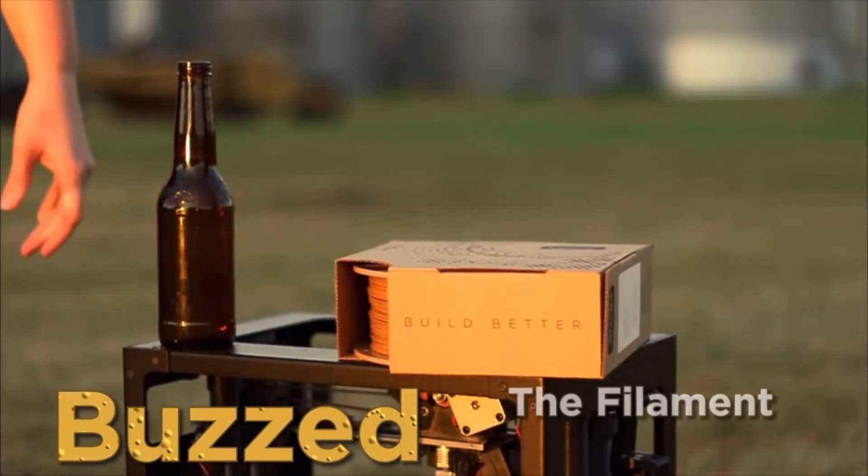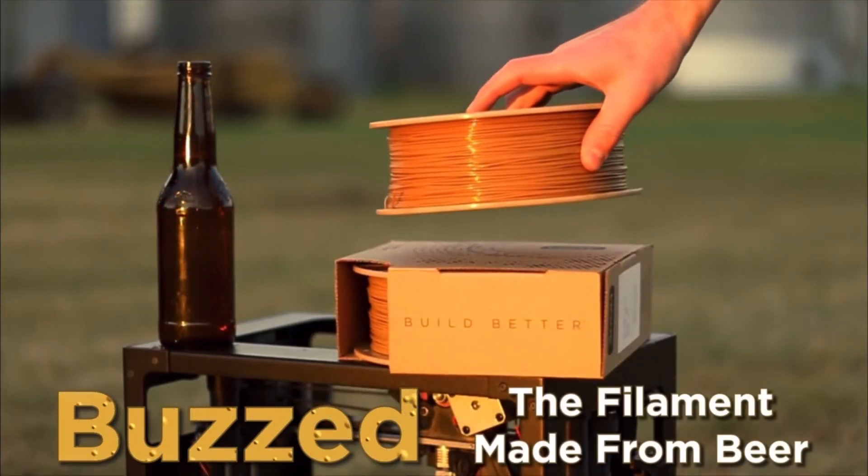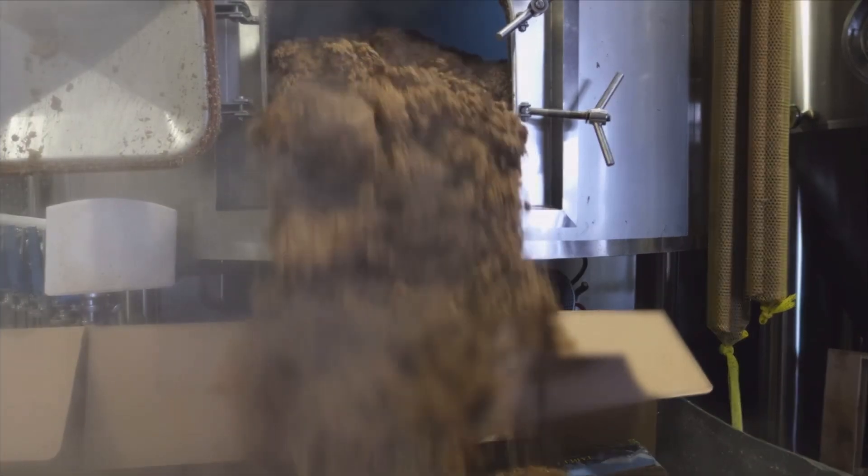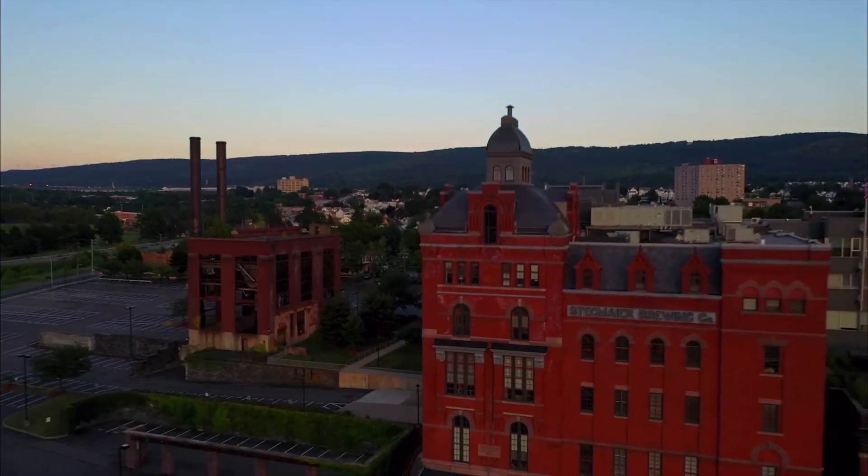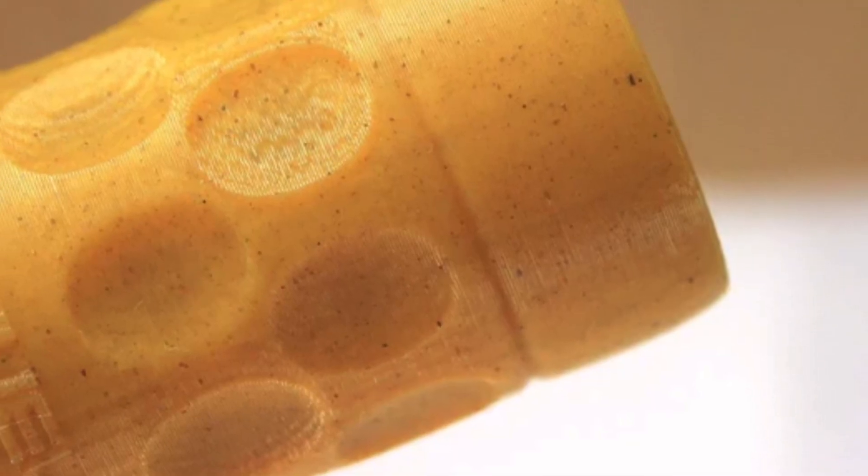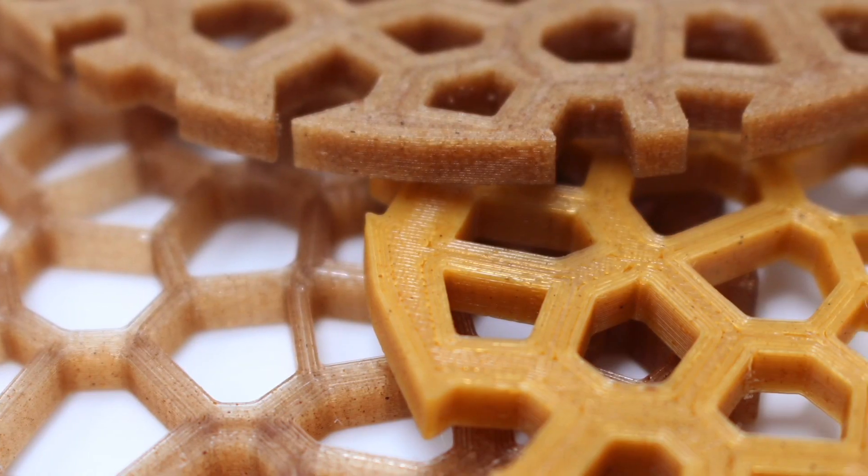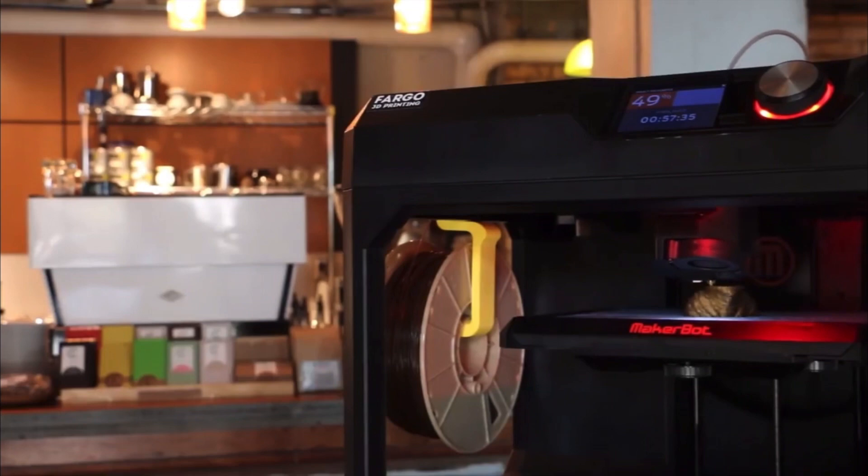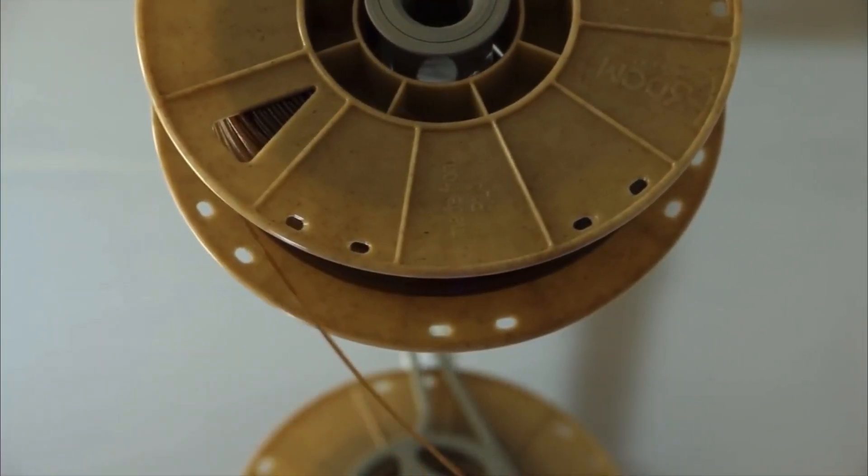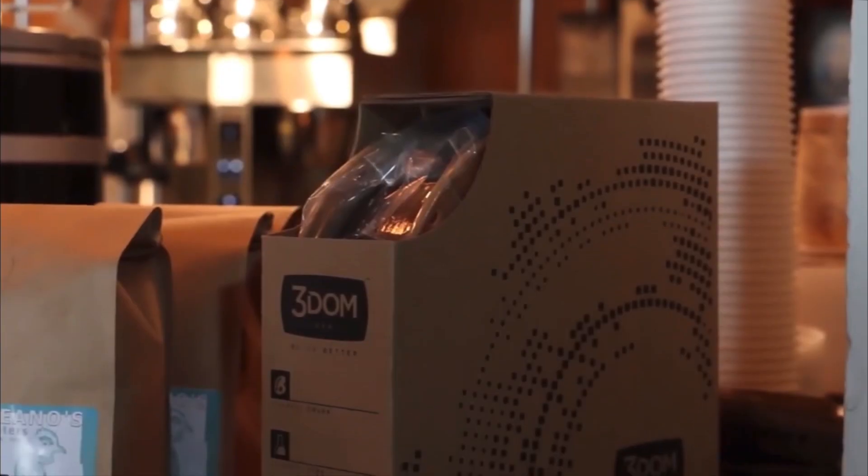Buzzed is their beer-based filament and is made by using waste products produced during the beer-making process, which is sourced from a local brewing plant. The filament produces objects with a rich golden color and noticeable natural grain. Buzzed and wound-up filaments can be printed on any machine capable of printing PLA using standard settings.